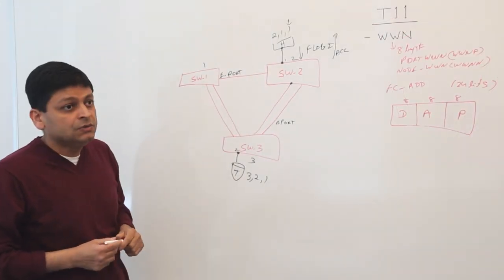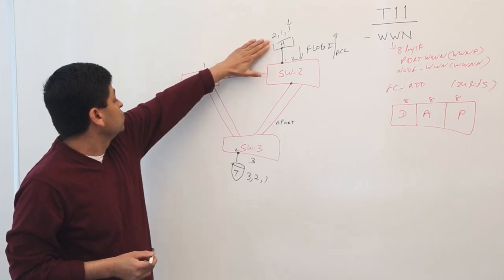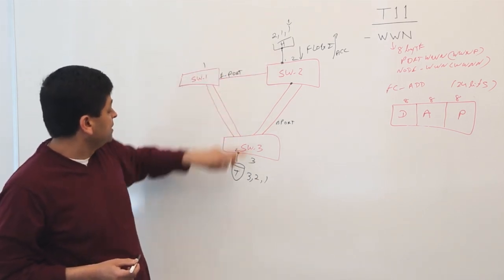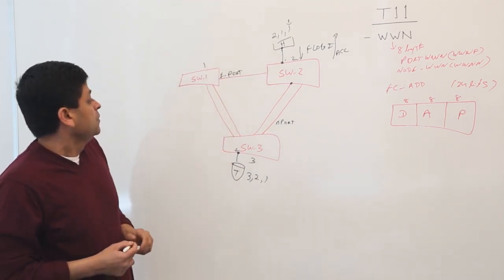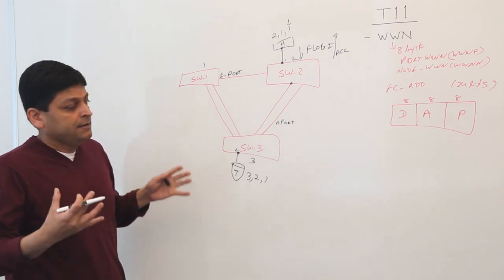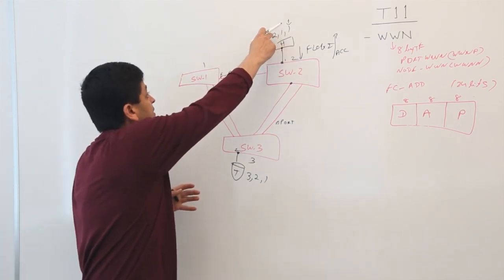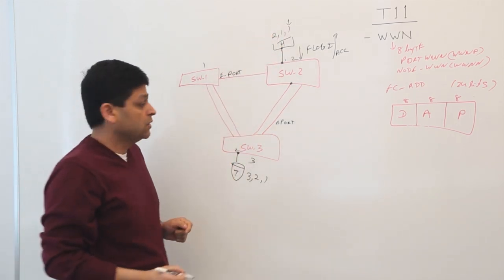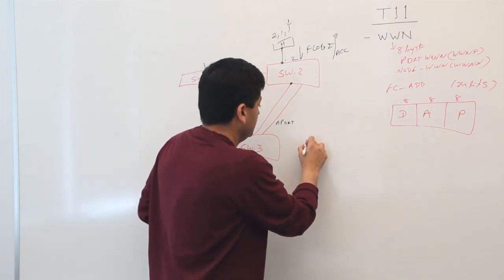Now, let's say if this host wants to send frame from here to here, how does the frame get there? As part of the Fiber Channel frame, if I were to draw a simple Fiber Channel frame, I would have an FC header.